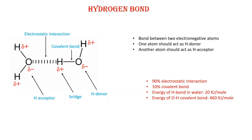Today we will study the first stabilizing interaction: hydrogen bond. If you see the structure of a water molecule, in the first molecule of water, oxygen which is partially negatively charged is bonded with hydrogen which has a partial positive charge. The bond between this negatively charged oxygen and this positively charged hydrogen is known as a hydrogen bond. This bond is electrostatic in nature because oxygen carries partial negative charge and hydrogen carries partial positive charge.